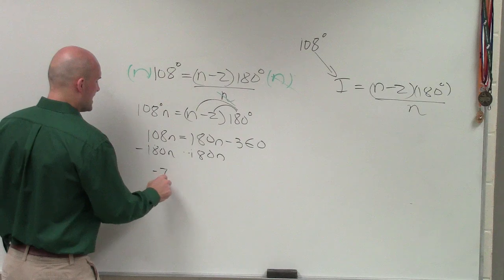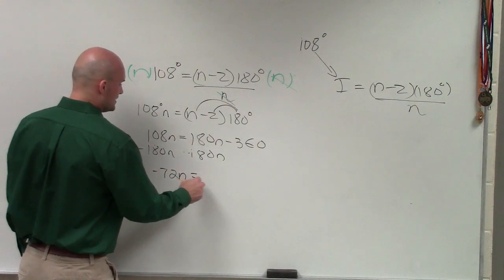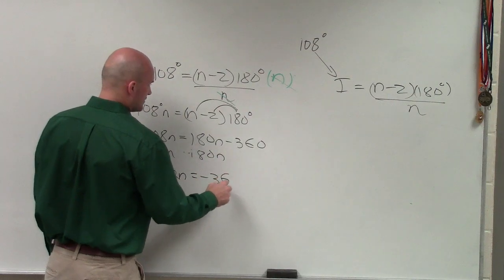Therefore, that's going to give me negative 72n equals negative 360.